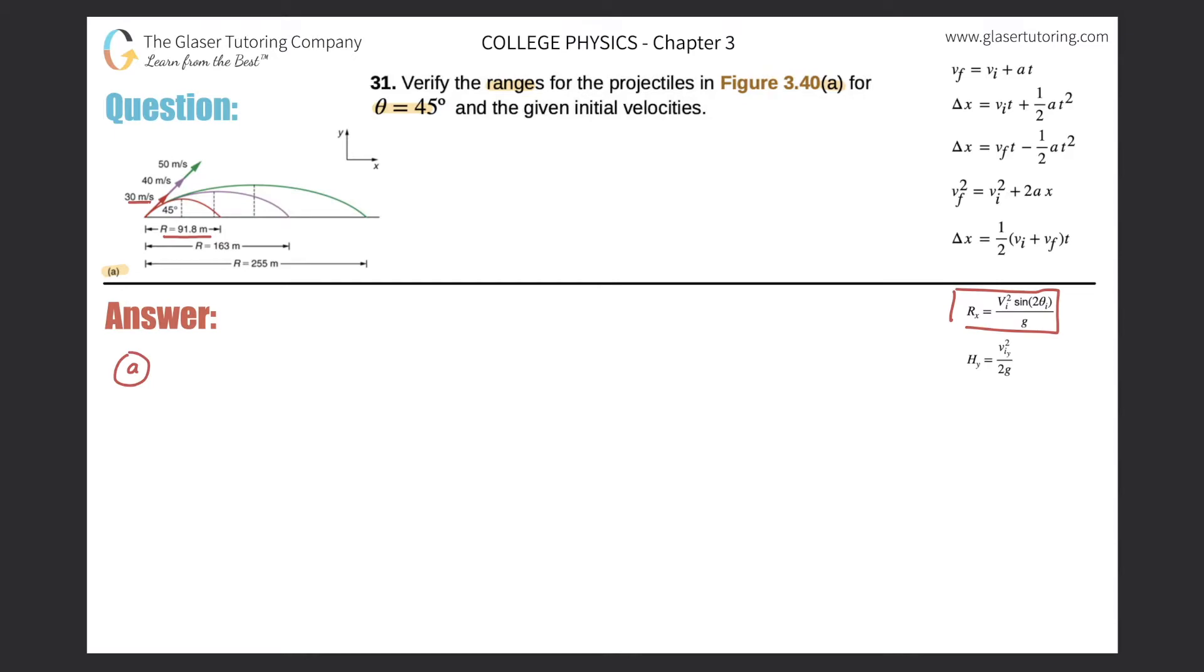So for letter A, for the red projectile, let's just write the formula. The range of X will be equal to the initial velocity squared times the sine of two times my initial angle, all divided by G. So we can plug everything in and make sure that they're equal. So the range was 91.8.